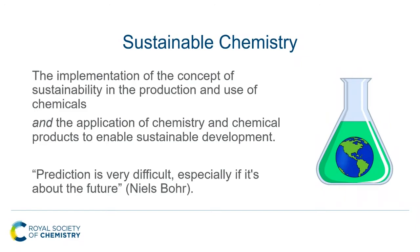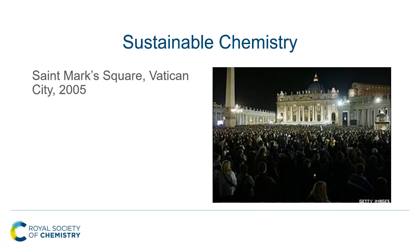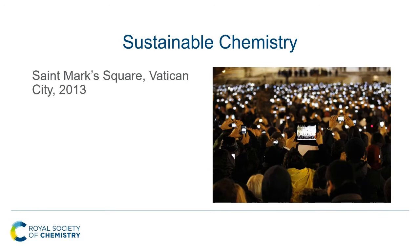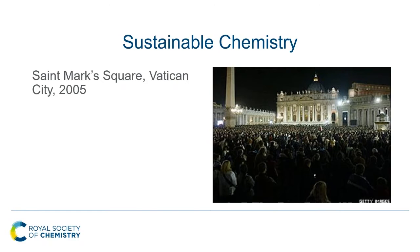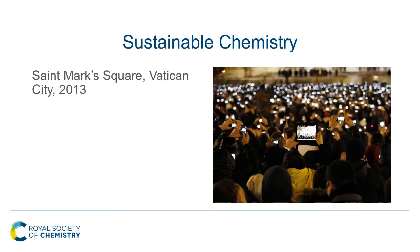Niels Bohr, well over 100 years ago, pointed out the difficulty with this definition — how do we know what the needs of future generations are going to be? As he said, 'Prediction is very difficult, especially if it's about the future.' So let me give you an example. Here's a photograph taken in St. Mark's Square in 2005.